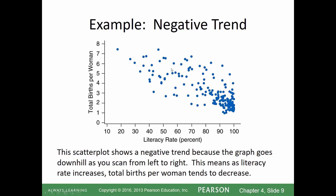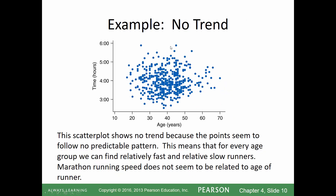Here's an example of a negative trend. As literacy rate increases, total births per woman tend to go down — so it has a negative association. And here's an example with no trend — everything is scattered at random with no pattern. As we can read: this scatter plot shows no trend because the points seem to follow no predictable pattern. Marathon running speed does not seem to be related to age of the runner.